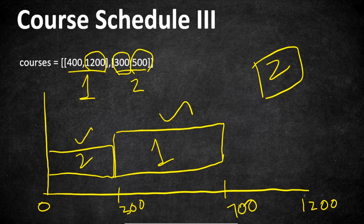The intuition we get from this example: if we want to complete as many courses as possible, we should first consider finishing courses with fewer end days before moving on to courses with more end days. Since courses with fewer end days must be finished sooner, completing them early and then moving to higher end-day courses helps us finish the maximum number of courses. So we sort the given courses in ascending order by their end days.